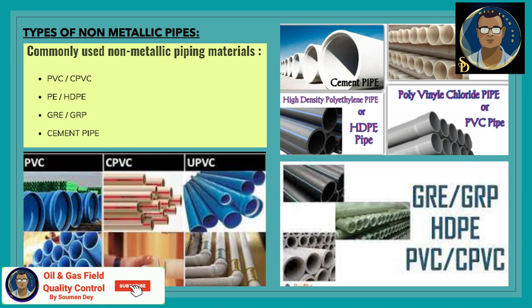Non-metallic materials are used in non-critical services such as water drainage where operating pressure and temperature are less than process lines. In this lecture I will give you an overview of these materials. Nowadays, because of developed technology, non-metallic pipelines even have the power to replace carbon steel or metallic pipelines.